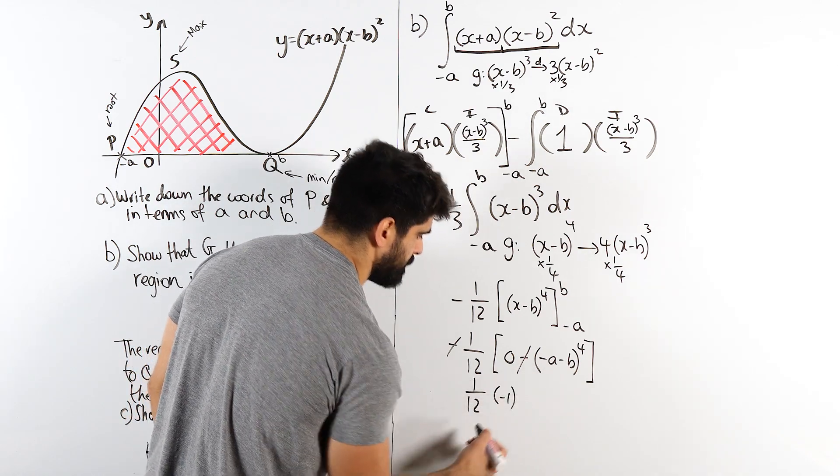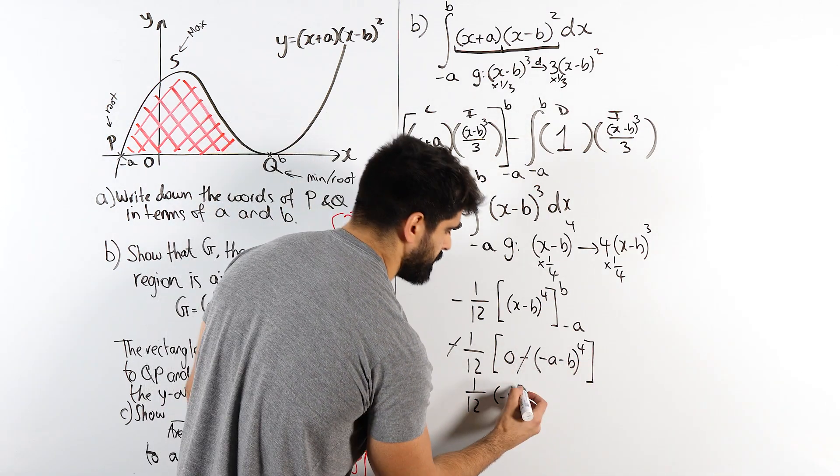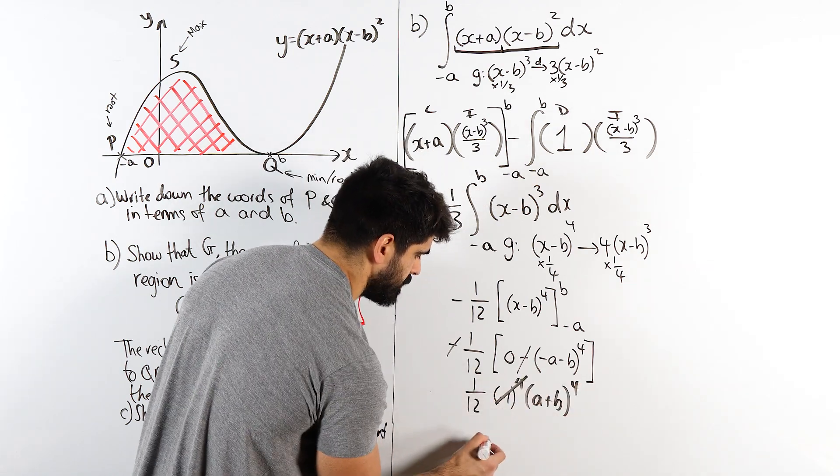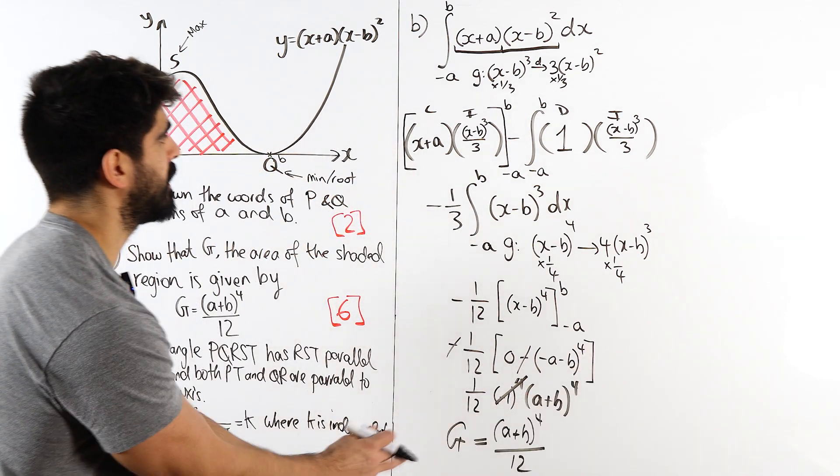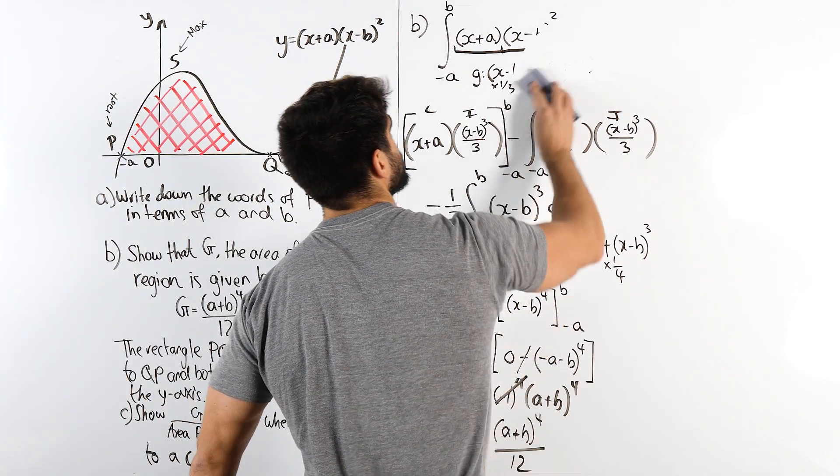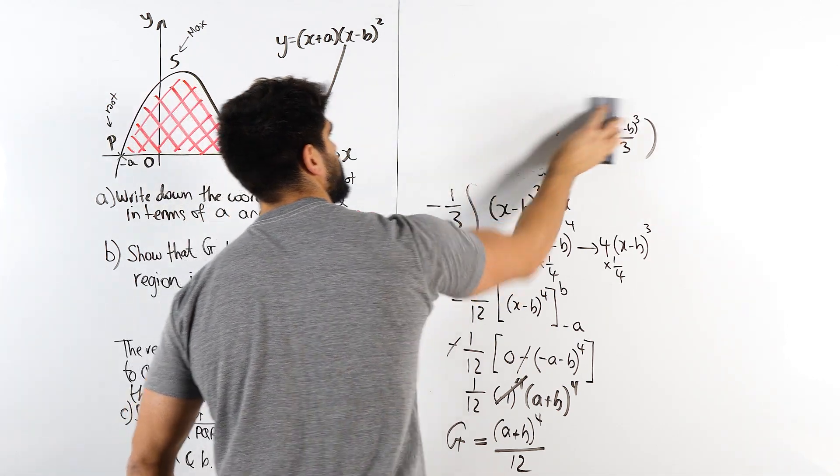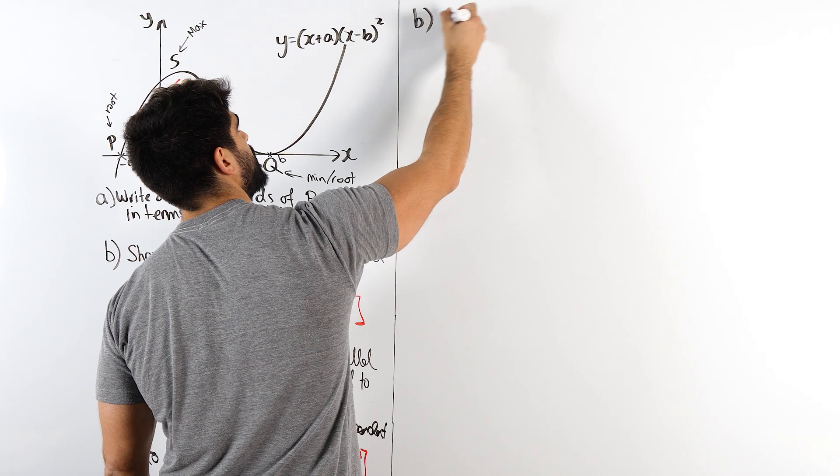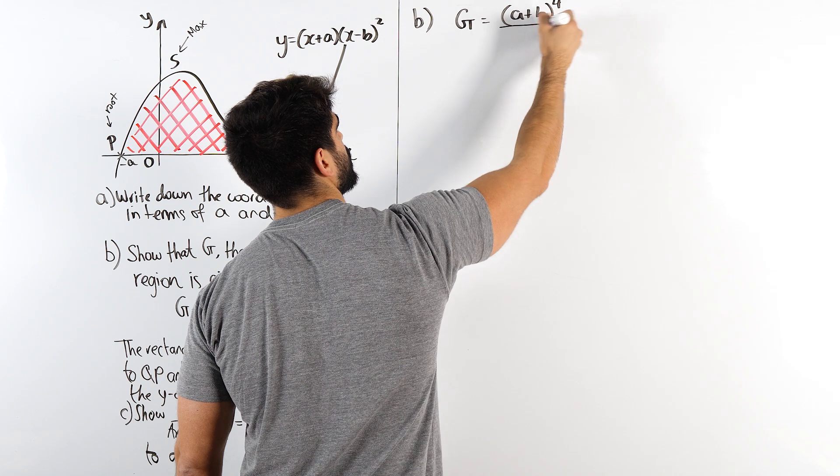Now let's start inputting our limits. So we have x minus b to the power of four between minus a and b. Subbing in b still gives us that same situation where it becomes zero. Minus subbing in minus a here, so minus a minus b to the power of four. The two minuses here cancel. These two negatives, because it's power of four, won't make a difference. You can factorize out minus one and when you raise it to the power of four, it just becomes one. So this gives us our solution, which is beautiful. Very satisfying when we can get six marks here.